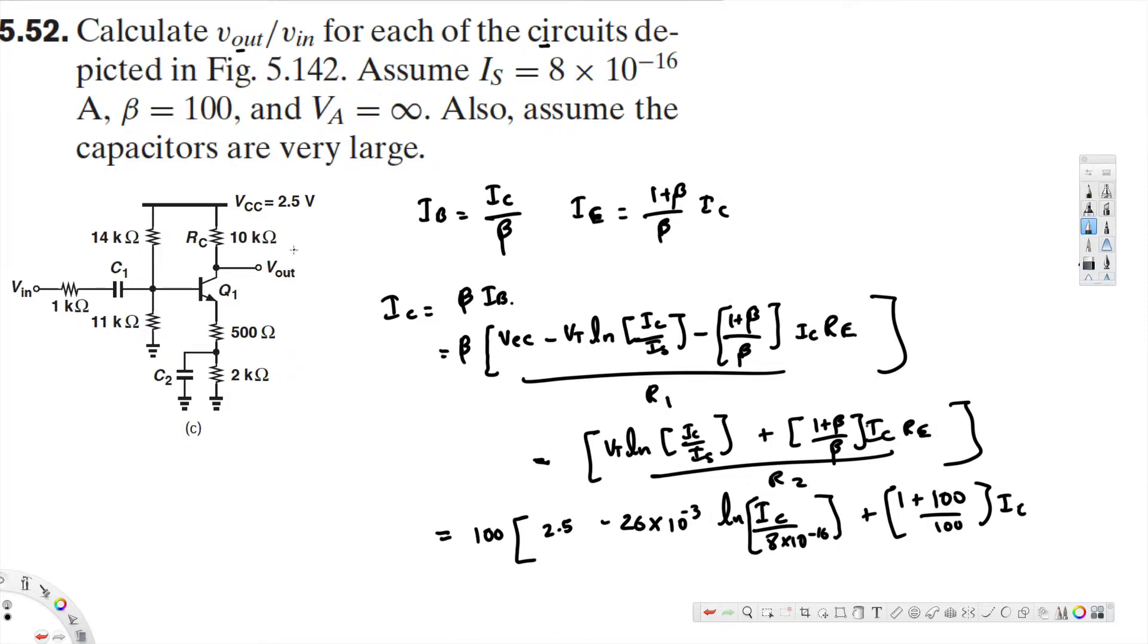Emitter resistance here, base collector and emitter. Emitter is 2 kilo ohm and 500, so this is in series. And since they have mentioned the capacitors are very large it means it can be just short circuited, so this is going to be just 2.5 kilo ohm. So here we are going to have 2.5 times 10 to the power of 3.